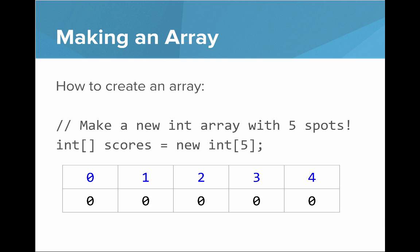So how do we make an array? If you want to make an array, a new integer array with five spots, you say int array scores equals new int, open square bracket, then five, and then close square bracket. And so there's some new syntax here. The syntax that you need to use arrays is those square brackets.